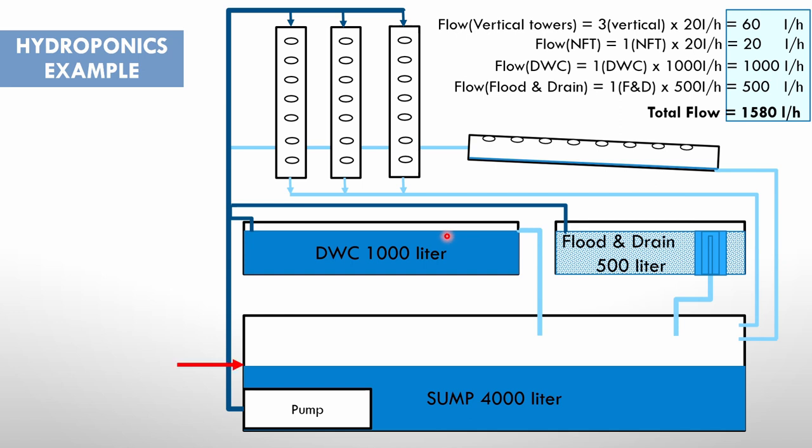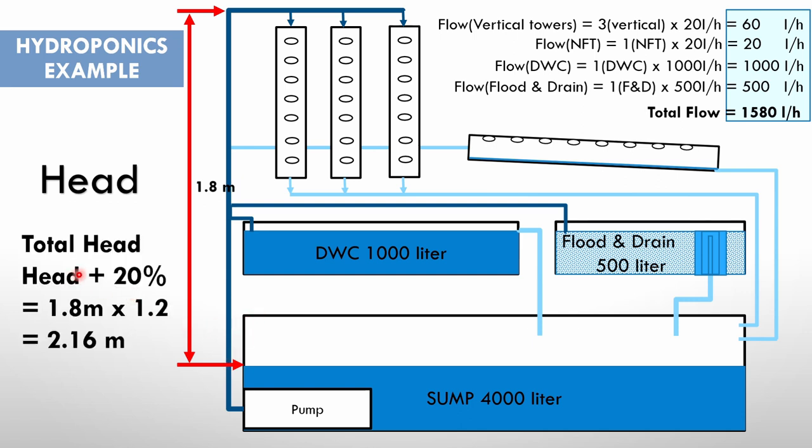Our head is calculated only once for the system, from the lowest point in the sump till the highest point where you lift your water. That will give us our head. In this case, 1.8 meters. Please remember that head is only calculated from the lowest to the highest point, and you don't consider anything in between. So that's our head. We've said we must compensate for friction in the pipes, and I do that by adding 20 percent to my head. So if the head is 1.8 meters, I multiply that by 1.2 to add that 20 percent. So my total head in this case is 2.16 meters.